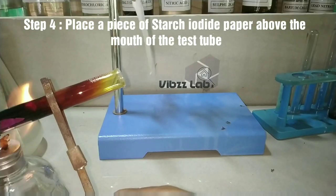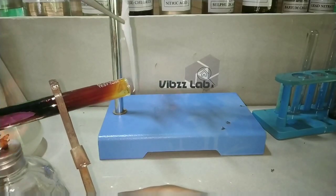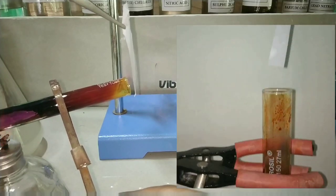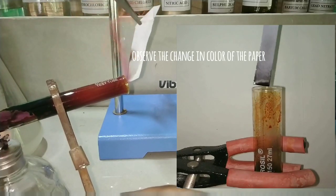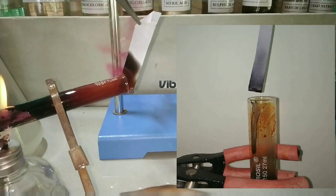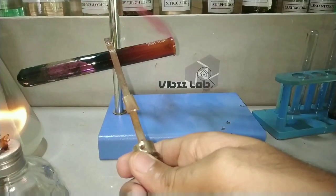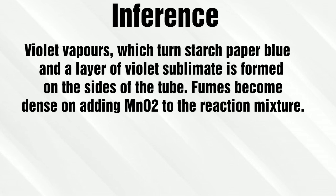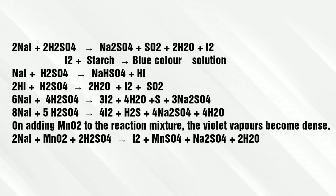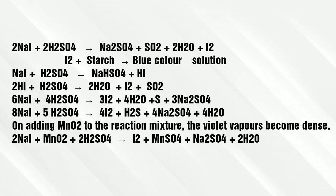Now place a piece of starch iodide paper above the mouth of the test tube. Starch iodide paper is prepared by mixing starch and potassium iodide solution. Observe the change in color of the paper — you can see the formation of a deep blue color. Concentrated sulfuric acid reacted with the iodide to form violet colored vapors of iodine, along with other compounds like hydrogen iodide, sulfur dioxide, hydrogen sulfide, and water vapor. Iodine stains the starch blue.